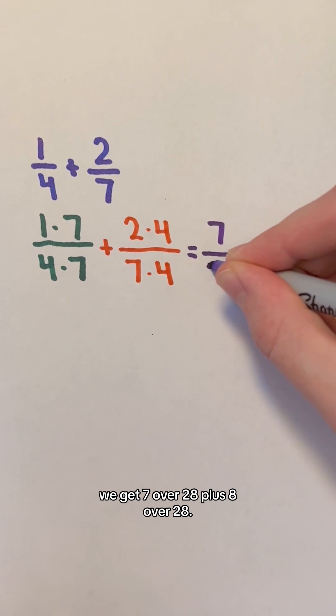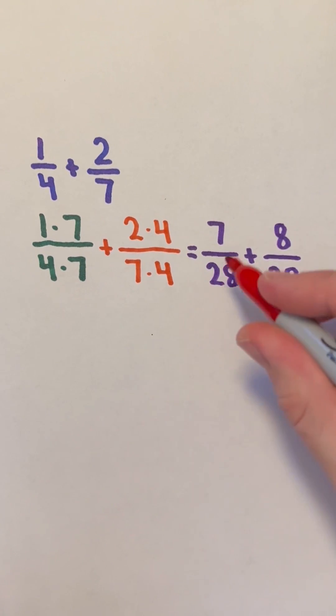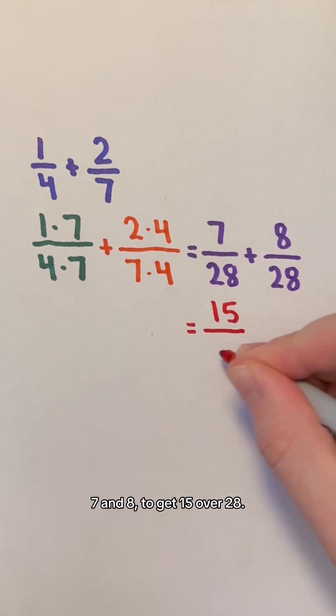After simplifying, we get 7 over 28 plus 8 over 28. The fractions now have the same denominator of 28. So we just add the numerators 7 and 8 to get 15 over 28.